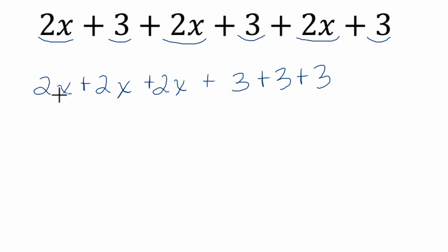Now we count. We have two groups of x, two more groups of x, and another two groups of x. Altogether, that's six groups of x. And then we have three, six, nine groups of one, or just nine. And that's our final answer.